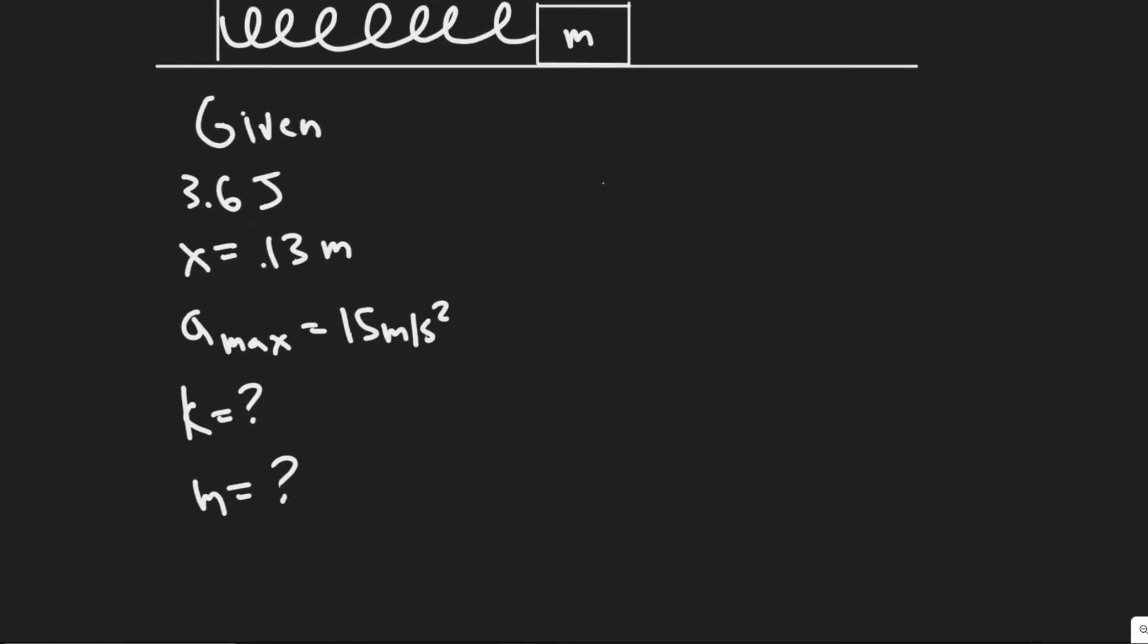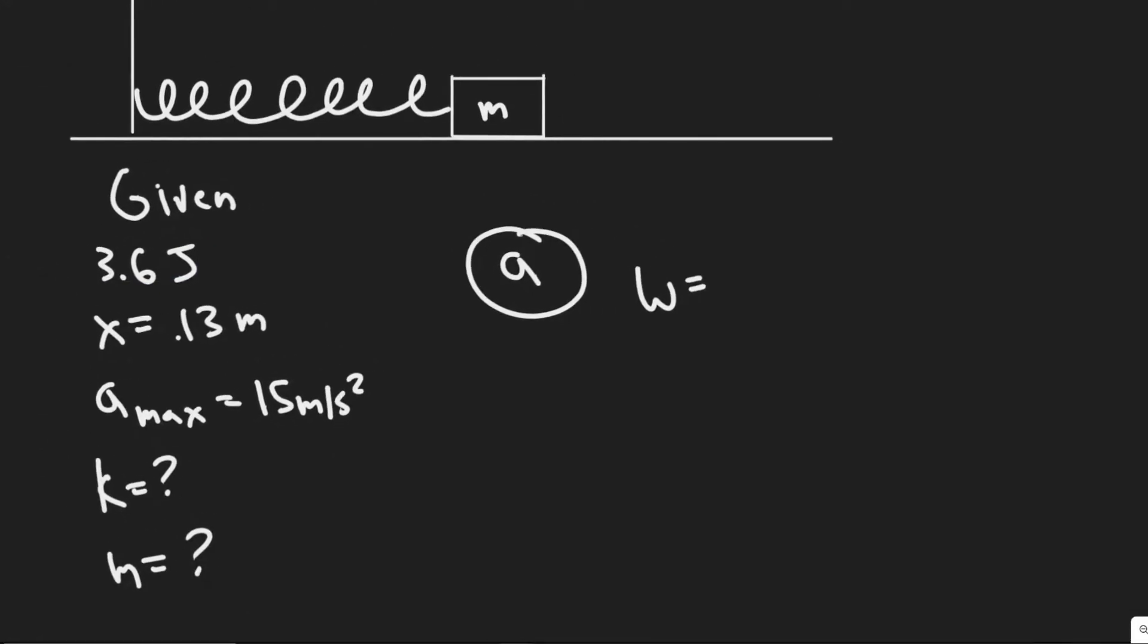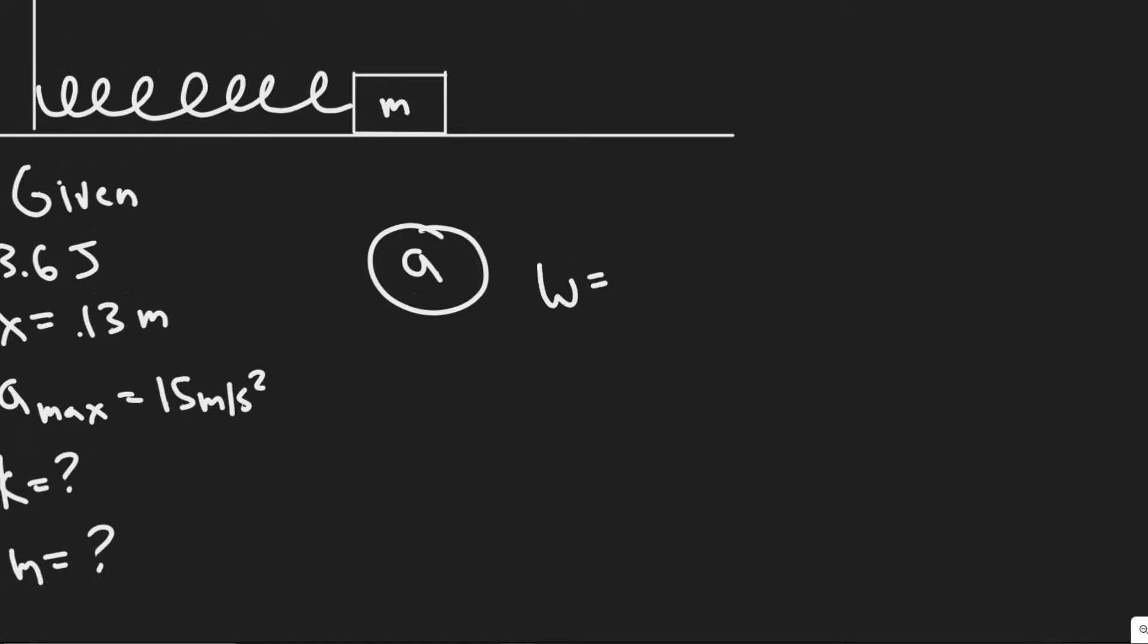Let's go ahead and start talking about how we're going to solve this. The first thing we need to realize is that the work done on the spring, which is 3.6 joules, is equal to the potential energy. So the elastic potential energy is one half K times x squared or A squared.